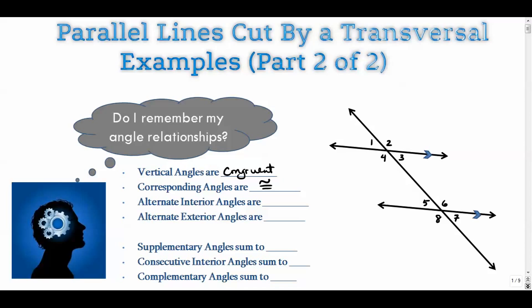Alternate interior angles. In this diagram, four and six are alternate interior, and those angles are also congruent.